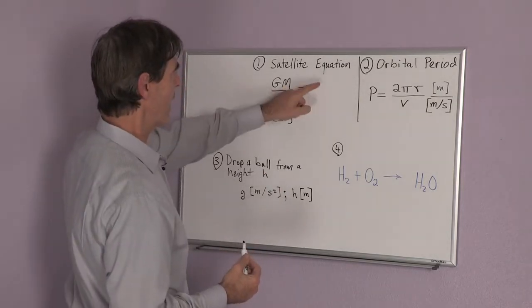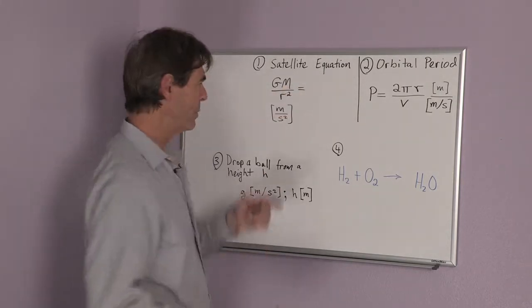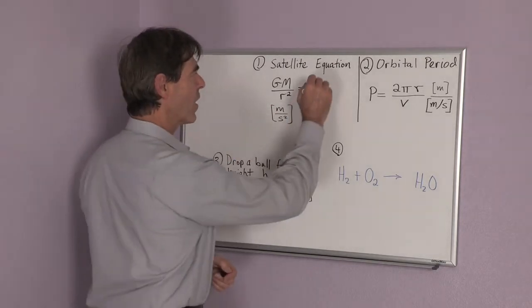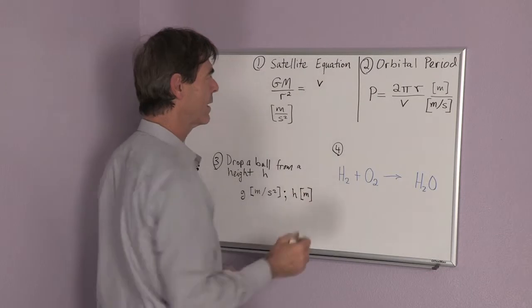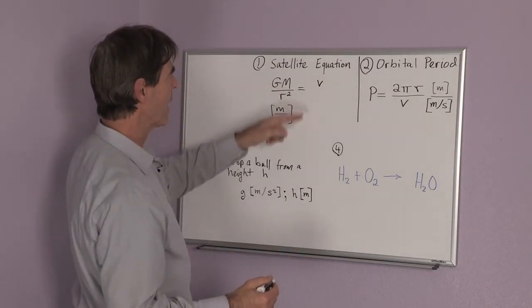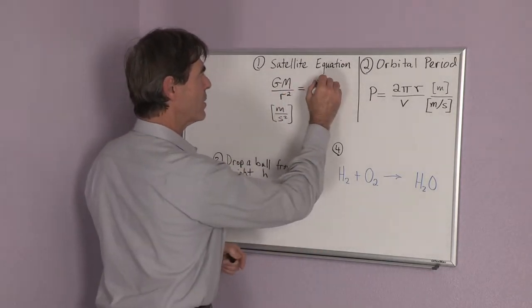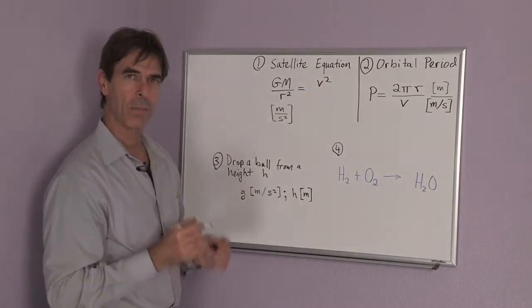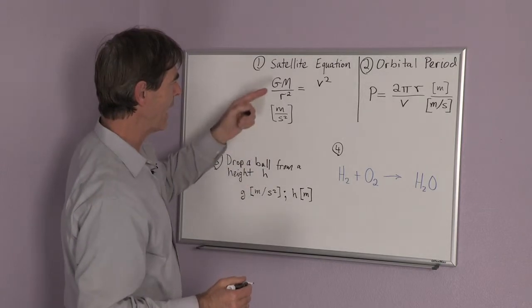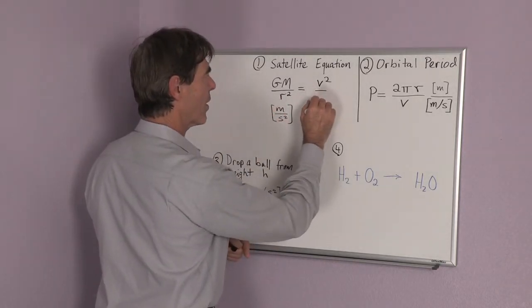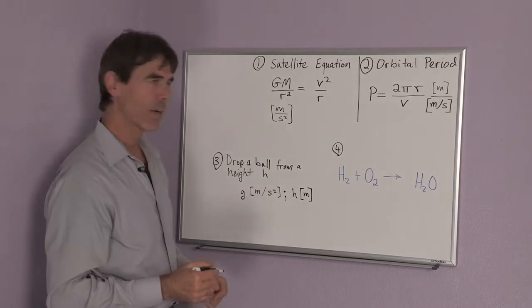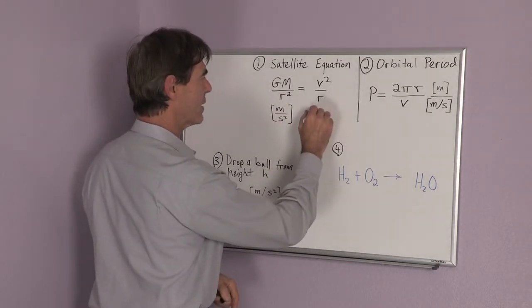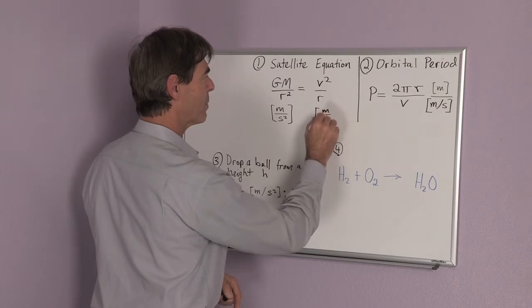I want to have on the right hand side something that gives me meters per second squared. I know that the velocity of the satellite has meters per second. So if I square this, I now have meters squared per second squared. And if I then divide by r, the distance to the center of the Earth, I have now the correct units on the right. Meters per second squared.